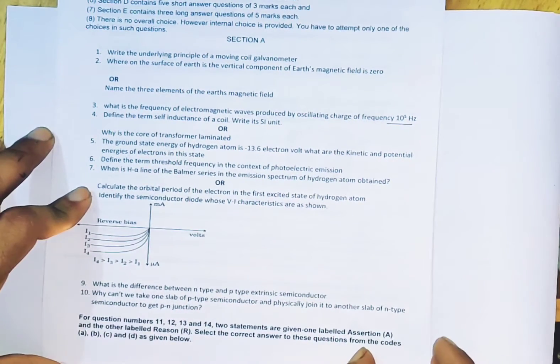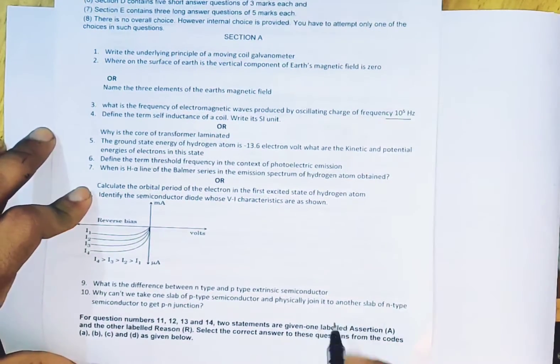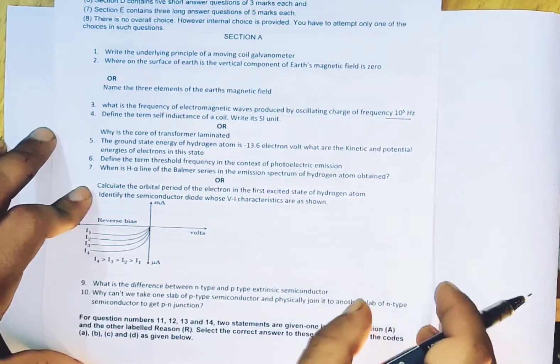Why can't we take one slab of p-type semiconductor and physically join it to another slab of n-type semiconductor to get a p-n junction?